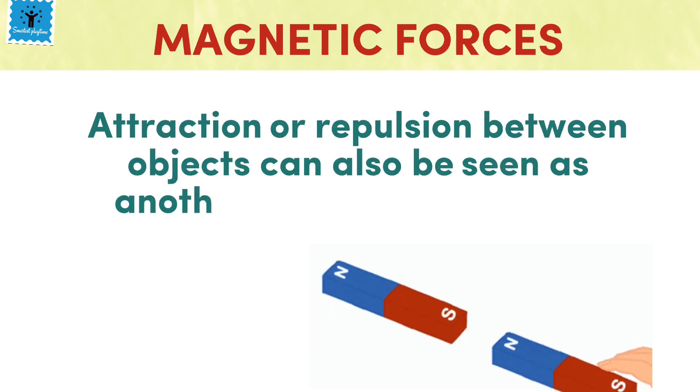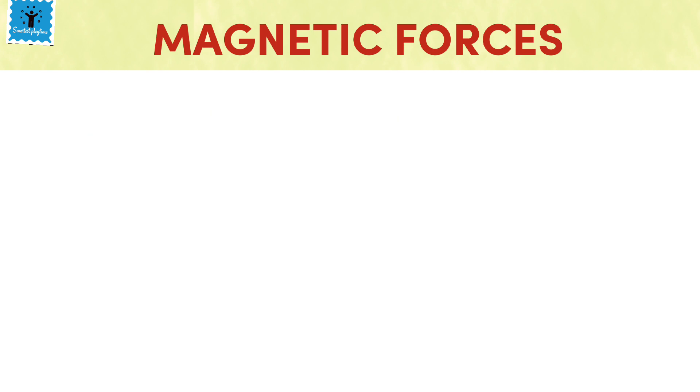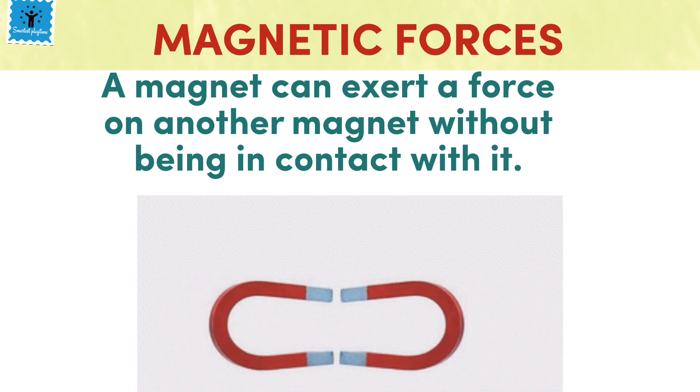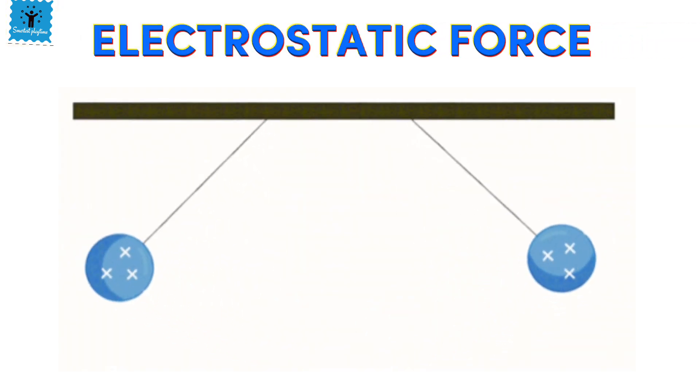For example, north and south attract each other while north pole and north pole repel each other. Attraction or repulsion between objects can also be seen as another form of pull or push. A magnet can exert a force on another magnet without being in contact with it. The force exerted by a magnet is an example of non-contact force.